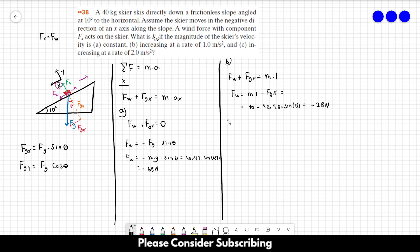So for letter C, now the acceleration is different. So in this case, we know that the force of the wind is equal to mass times the acceleration. So this is equal to 2 times 40 minus 40 times 9.8 times the sine of 10 degrees. And this gives us 12 newtons, plus 12 newtons. So the force of the wind points downhill. So that's the answer of this exercise.